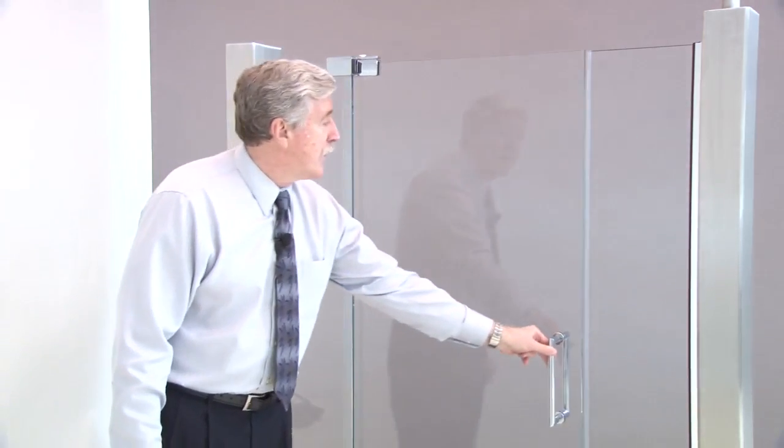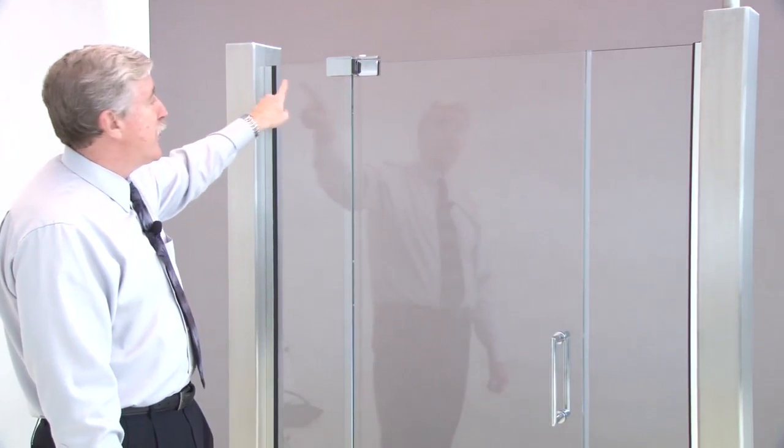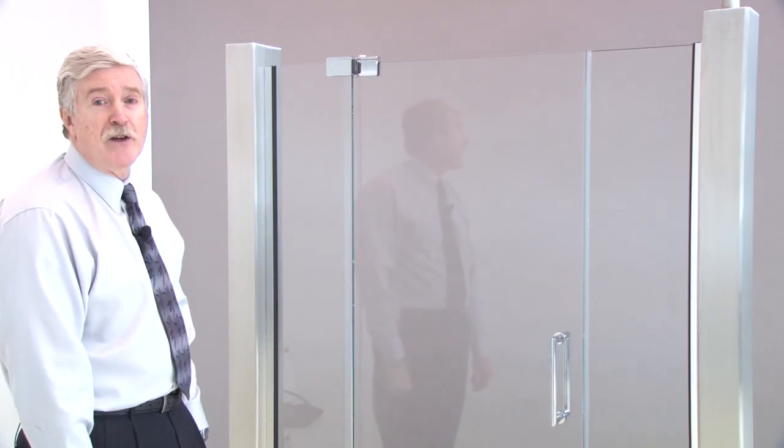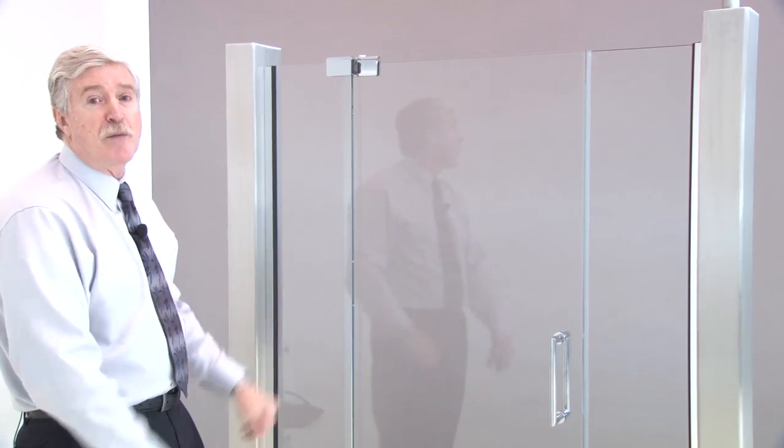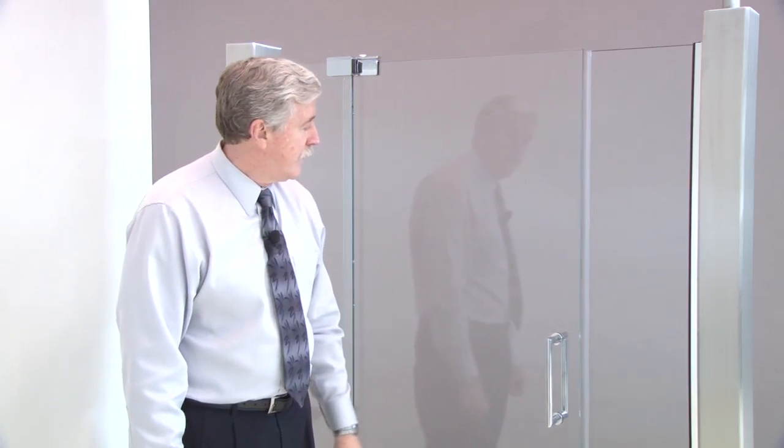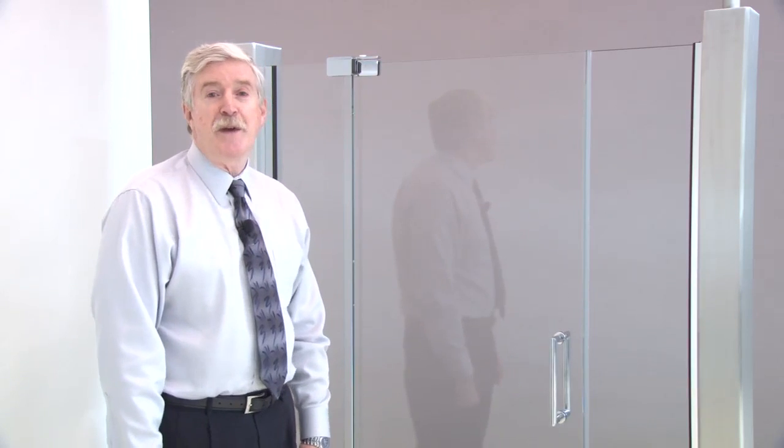And again that overlap can be just about any desired width that you want it to be. Of course if it gets too big you might not like the look of it but the door will operate properly. And we have this nice soft seal that the door closes into. So it really makes a nice system.